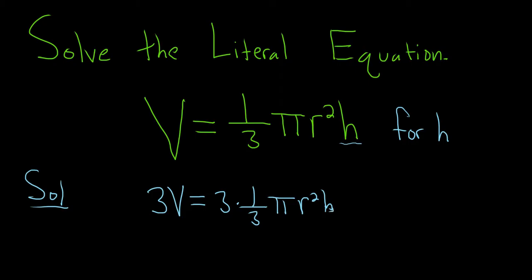You see now they cancel, they go away. So you have 3V = πr²h.